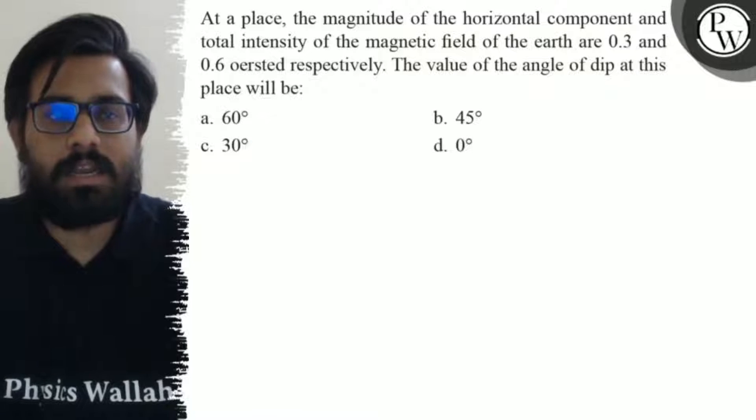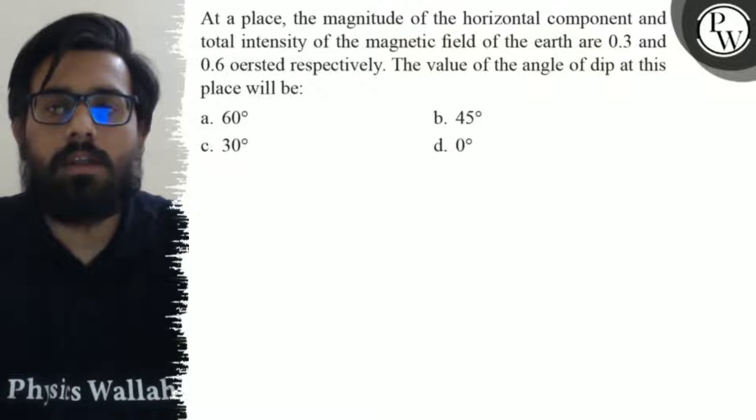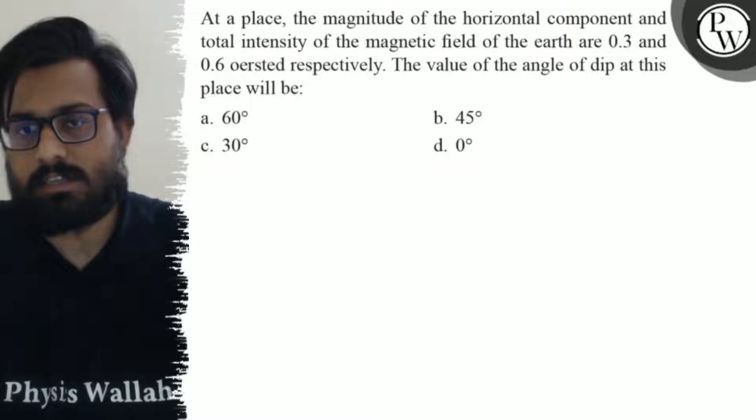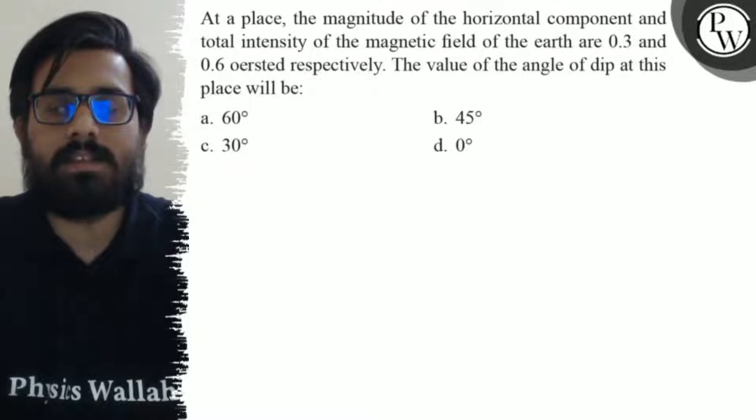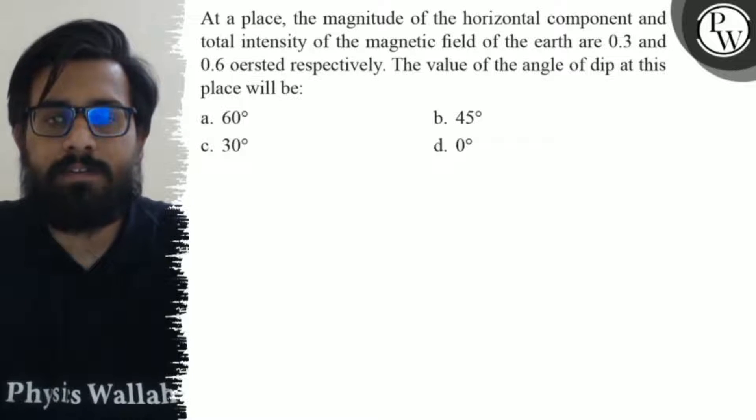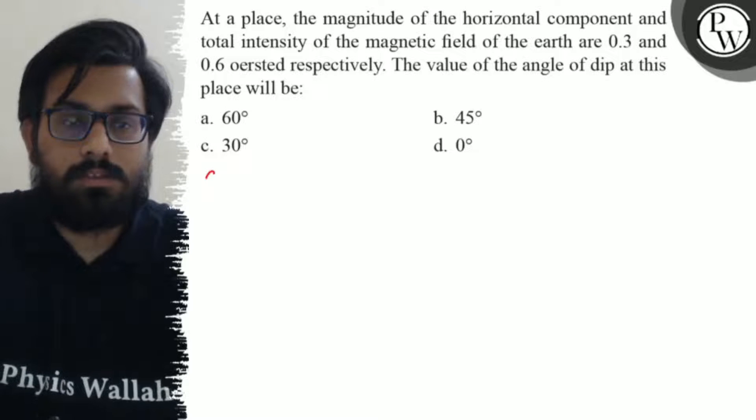Hello Machos. So let's see the question. At a place, the magnitude of the horizontal component and total intensity of the magnetic field of the earth are 0.3 and 0.6 oersted respectively. The value of the angle of dip at this place will be: first option says 60 degree, second option says 45 degree, third option says 30 degree, and fourth option says 0 degree.